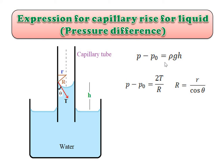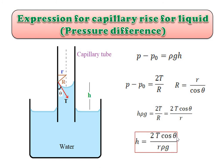Equating the two expressions: h·rho·g equals 2T divided by R. Substituting R equals r divided by cos(theta), we get h·rho·g equals 2T·cos(theta) divided by r. Solving, the capillary rise is: h equals 2T·cos(theta) divided by (r·rho·g). This shows that h and r are inversely related — when radius decreases, height increases.